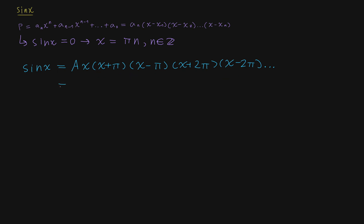So let's do that. We're going to get A times x, times x squared minus pi squared, times x squared minus 4 pi squared, and so on. And now we can write this in product notation as A times x times, now it's an infinite product, from n equals 1 to infinity of x squared minus pi squared n squared.